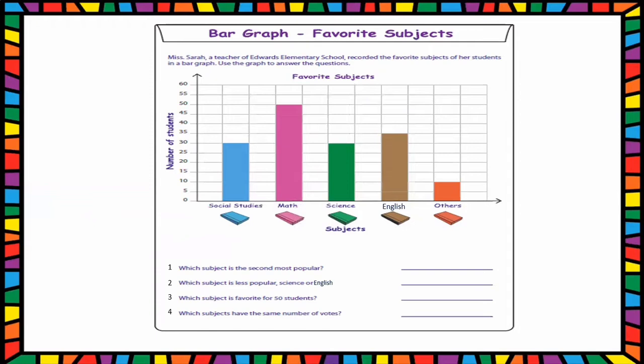Some questions are written. Which subject is the second most popular? The most popular subject is math—the bar graph is showing math with 50 students. The second most popular is English, which is the favorite subject of 35 students, as the bar graph is showing.